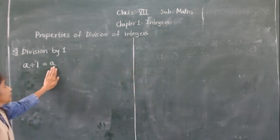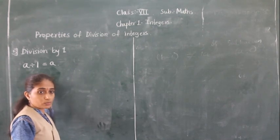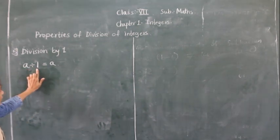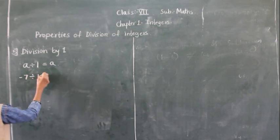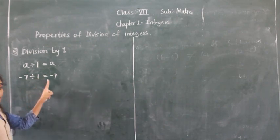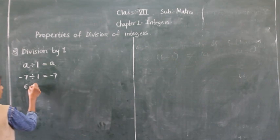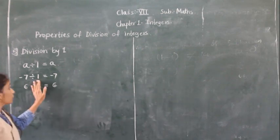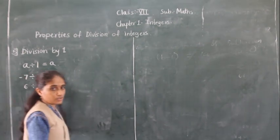The next property is division by 1. Any integer divided by 1 gives the integer itself as the answer. For example, minus 7 divided by 1 equals minus 7, and 6 divided by 1 equals 6. So any integer divided by 1 equals the integer itself.